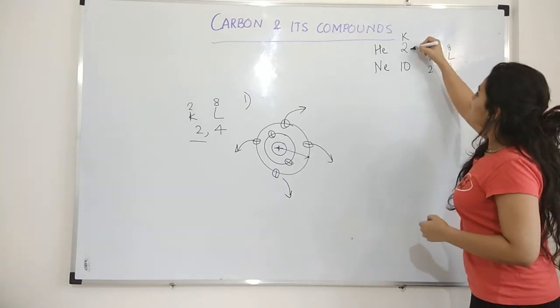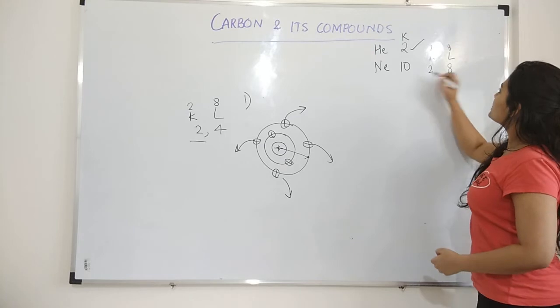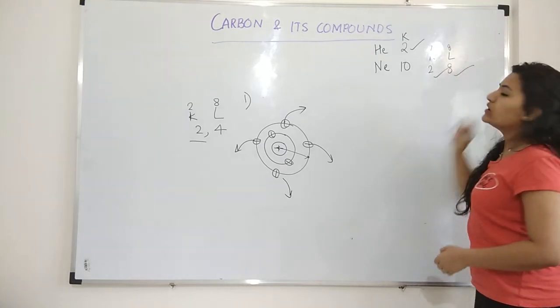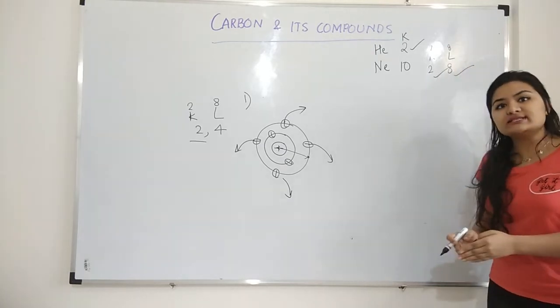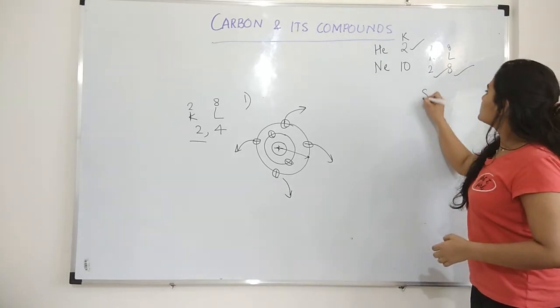Now because here, it has only one shell and that shell is full. It has two shells and both the shells are full. Because the shells are completely satisfied or completely filled, these are stable.